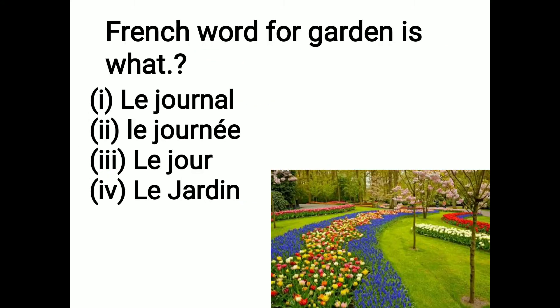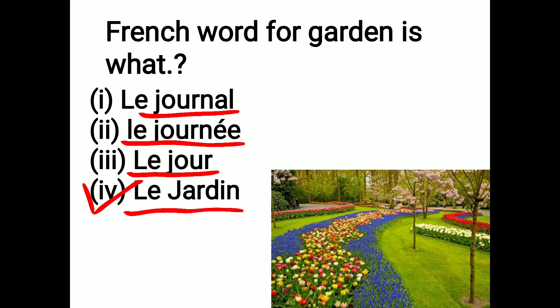Next one: the French word for garden is what? French mein aap garden ko kya bolte ho? Your options are le journal, le journée, le jour, and le jardin. Your 5-second time begins now. The correct answer is le jardin. Jardin ka matlab kya hota hai? Garden. Journal ka matlab hota hai newspaper. Journée ka matlab hota hai day. Jour ka matlab bhi day hota hai. And jardin ka matlab kya hota hai? Garden.